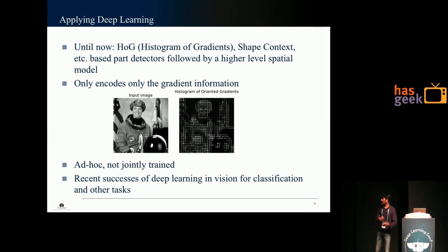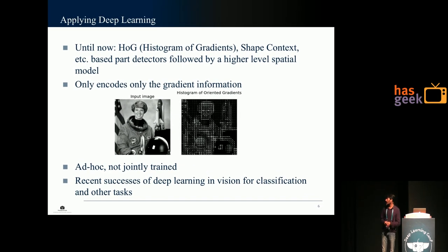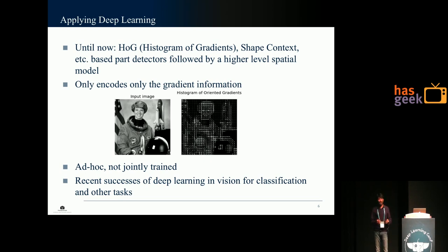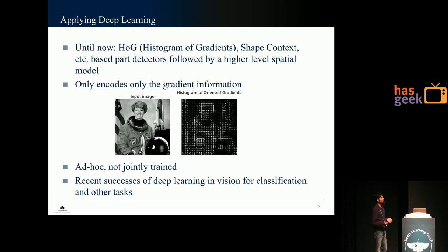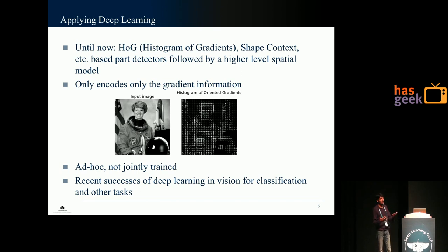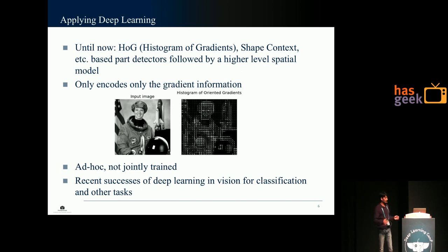We started to apply deep learning to this problem in 2013. Until then, HOG-based part detectors or shape context-based part detectors followed by a higher-level spatial model was what people usually did. But HOG, which stands for histogram of gradients, only considers gradient information, so we lose out on color, texture, etc. Also, these models were usually ad hoc and not jointly trained — you would have a part detector, a spatial model, and weights you would have to tweak. Due to recent successes of deep learning for classification and other tasks, we decided to try using deep learning for human pose estimation.